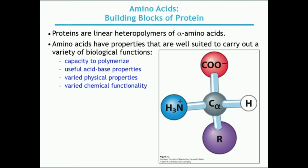Here is the general structure of an amino acid. All amino acids have a central carbon labeled the alpha carbon, and on that alpha carbon there are four groups: a carboxyl group (deprotonated at physiological pH), an amine group (protonated as NH3+ at physiological pH), a simple hydrogen, and an R group. The R group is different for all 20 amino acids and is what specifies which amino acid you're looking at.